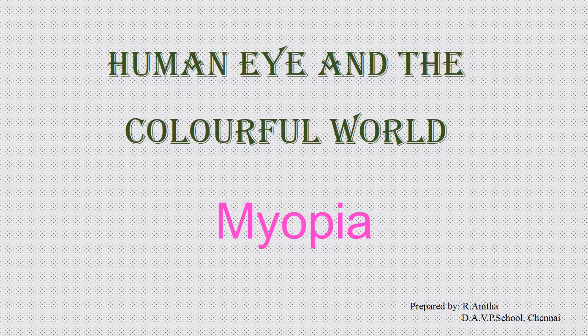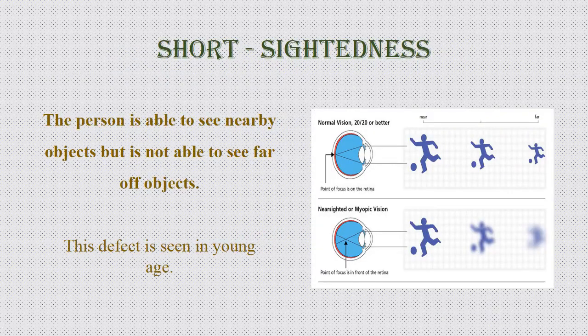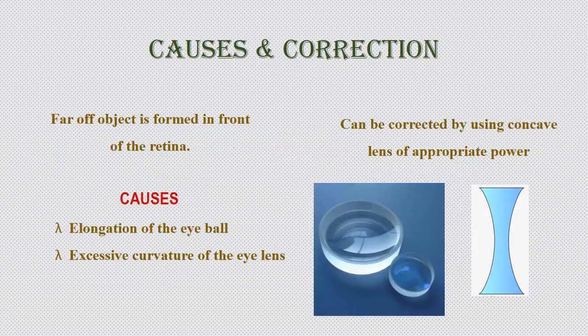In this module we'll be discussing myopia, which is otherwise called short-sightedness. A person suffering from short-sightedness will be able to see objects which are close by or nearby, but will not be able to see objects at a far-off distance. This defect is generally seen with age. The person is not able to see far-off objects because the image is focused in front of the retina, and since it's not formed on the retina, you don't get a clear image.